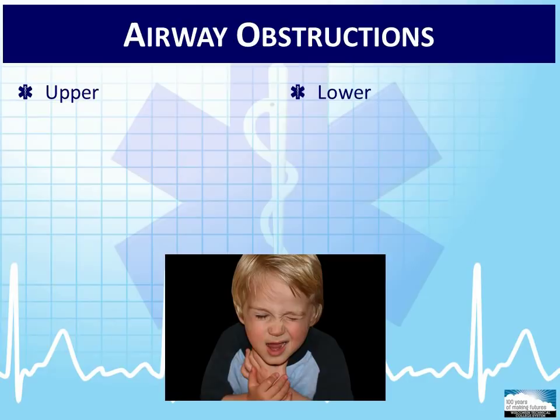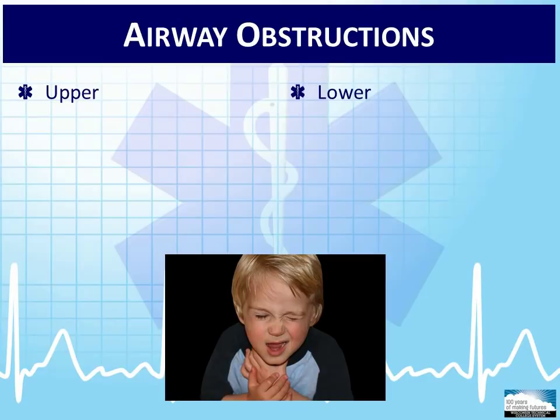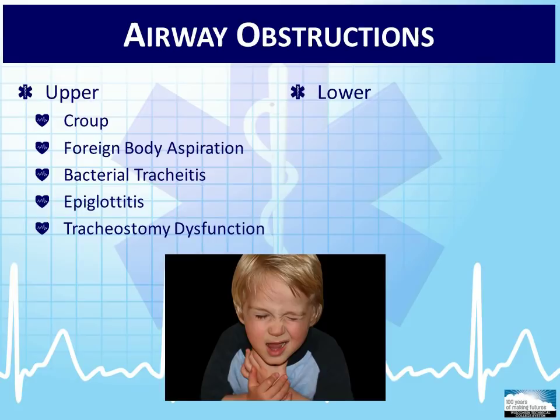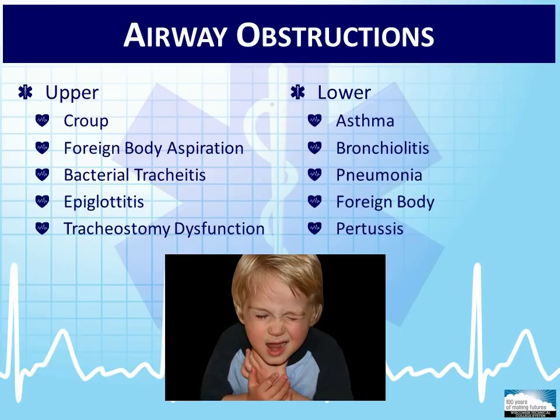Common upper airway obstructions include croup, foreign body aspiration, bacterial tracheitis, epiglottitis, and tracheostomy dysfunction. General lower airway obstructions commonly caused by reactive diseases include asthma, bronchiolitis, pneumonia, foreign bodies, and pertussis. While many of these pathologies impact adults as well, we will take a little time to discuss these obstructions as they specifically impact pediatric patients.